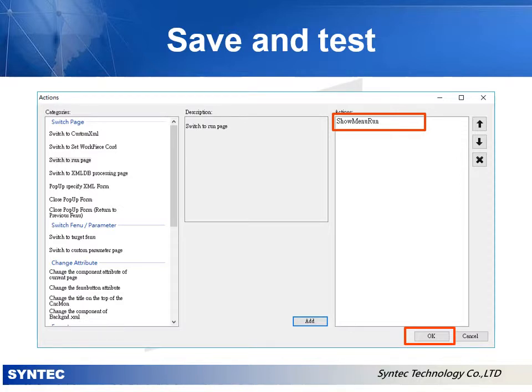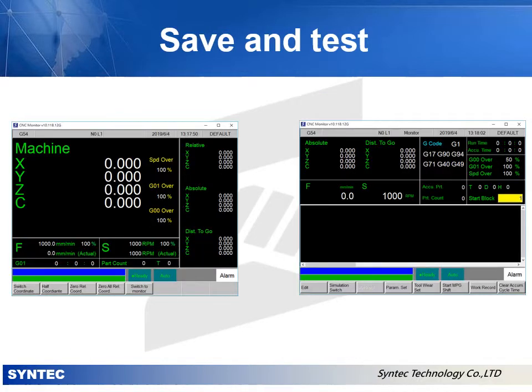Then save the file and restart the simulator. In the main screen, click F1 to enter the machine coordinate Fenubar. We can find that there is a new button, and clicking it can switch to the monitor page. Thank you.